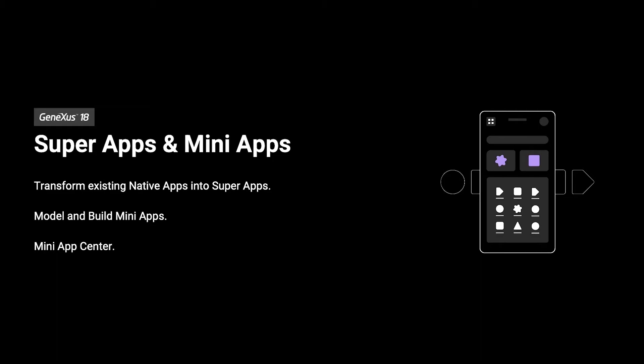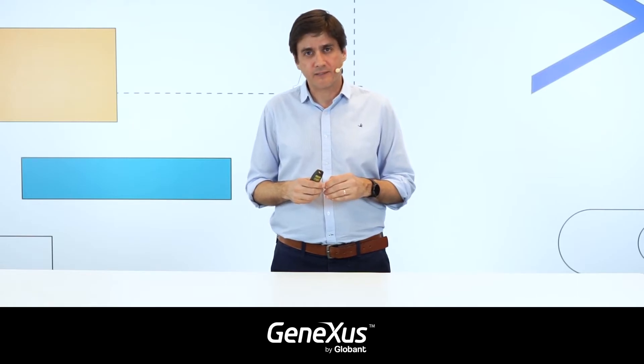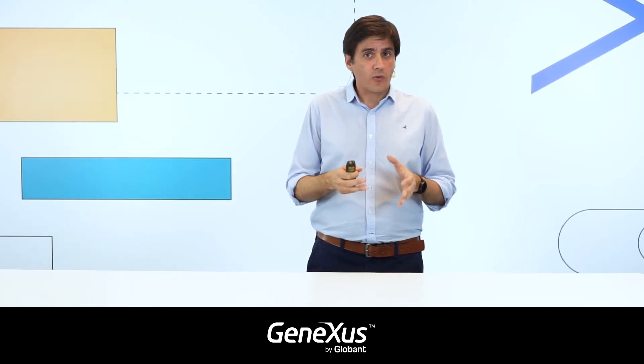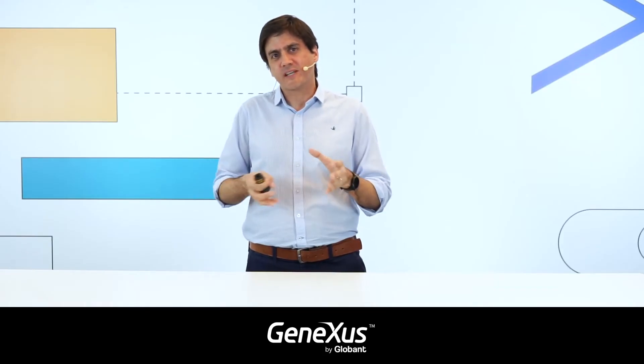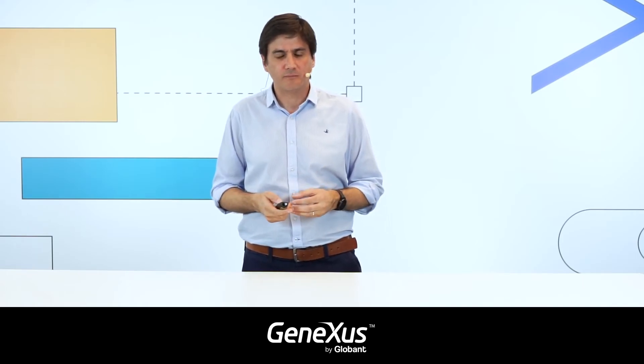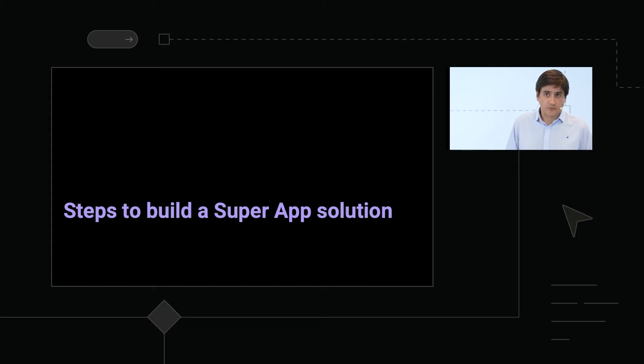In GeneXus, we're giving you the possibility to build a full mini app and super app solution, which includes super apps, mini apps, and the mini app center. This is the repository or platform where you register and manage all the mini apps, and super apps will have access to it to see which mini apps are valid for a certain application. In this first version included in GeneXus 18, the first scenario we wanted to tackle was to build any native application into a super app — meaning any native application developed with or without GeneXus can become a super app, without a full rework or reprogramming of the application.